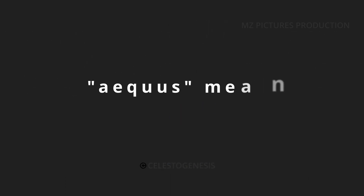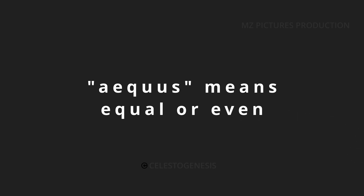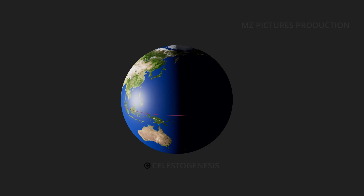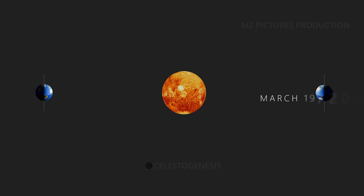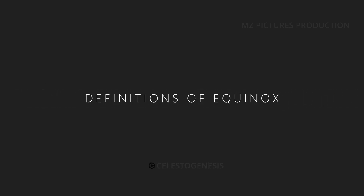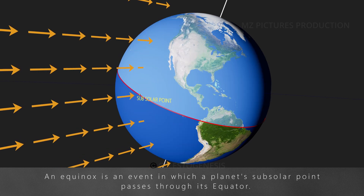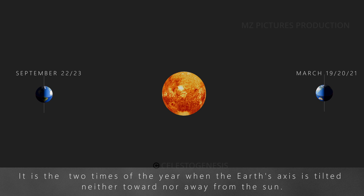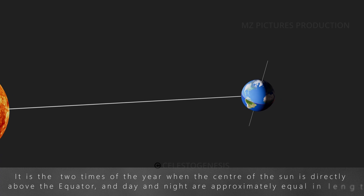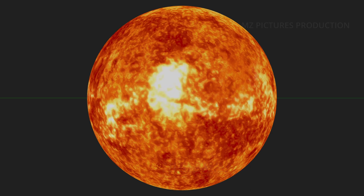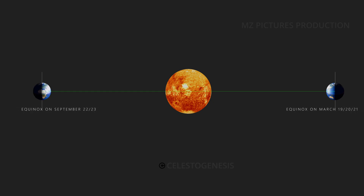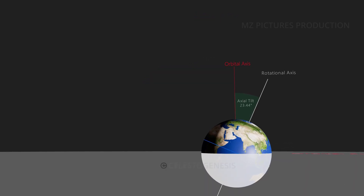Equinox descends from the Latin equis, meaning equal or even, and nox, meaning night — a fitting origin for a word describing days when daytime and nighttime are equal in length. On Earth, there are two equinoxes every year, one around March 19–21 and another around September 22–23. An equinox is an event in which a planet's subsolar point passes through its equator; it is the two times of the year when Earth's axis is tilted neither toward nor away from the Sun, and day and night are approximately equal in length. Equinox occurs due to Earth's rotation, axial tilt, and axial parallelism.